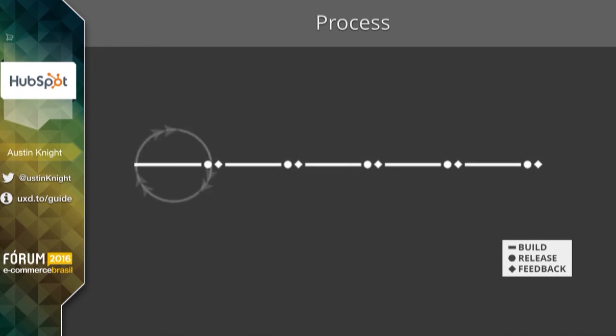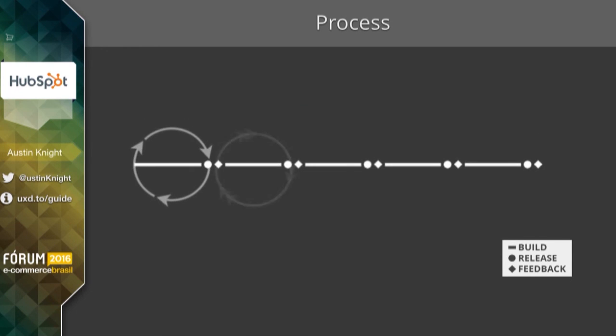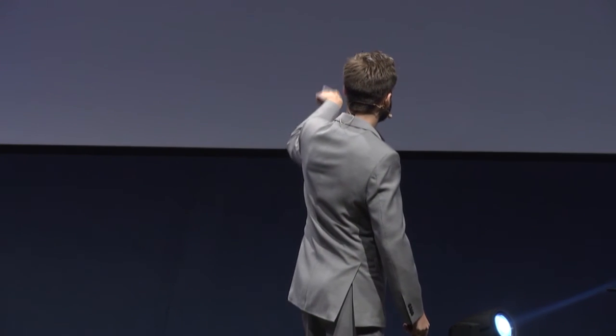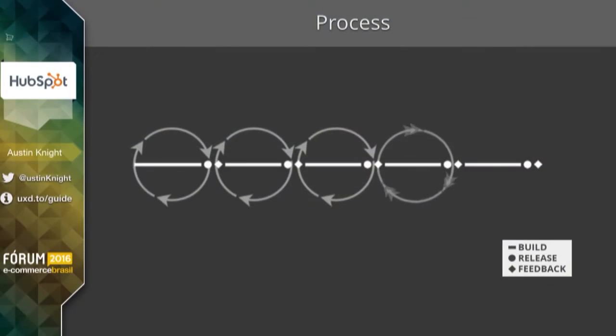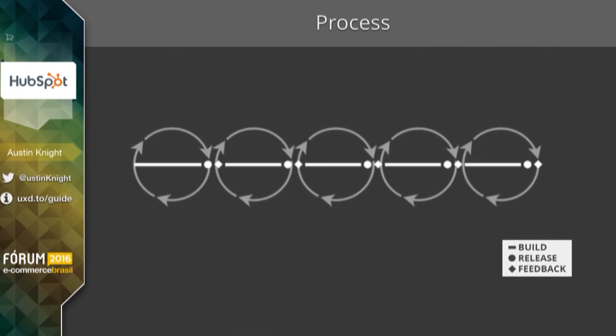We can see on this timeline how these Lean UX cycles move across it: Think, Make, Check — Think, Make, Check — over and over again until we finally have a product that we're pretty comfortable with.